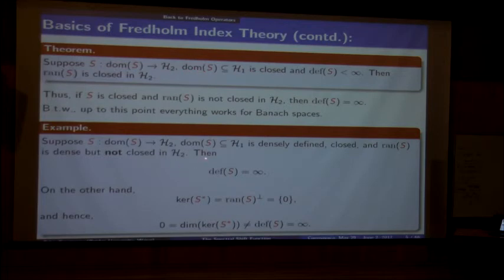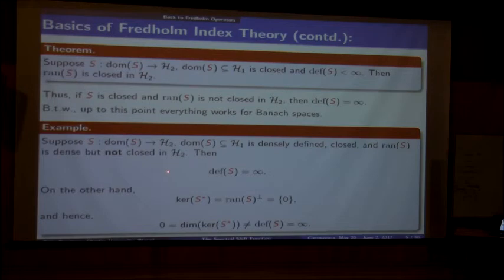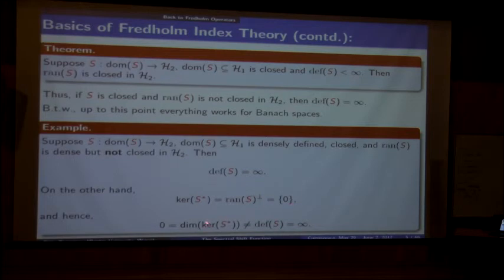The example is like this. Take an operator that is densely defined—I need it densely defined because I'm talking about the adjoint; I cannot talk about the adjoint without it being densely defined—and closed. Now I'm assuming that the range is dense, but not closed. In that case, because the range is not closed, you must have defect infinity. On the other hand, if you look at the kernel of S star, it's just the range of S perpendicular. Since the range is dense, being perpendicular means you get just the zero vector. As a result, the dimension of this space is zero, whereas the other dimension is infinite. So one really has to be careful in what setup one works.